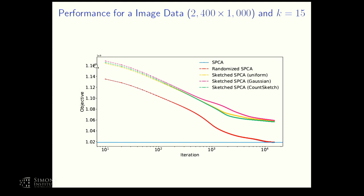We could increase the amount of sketching, but then computational cost increases. The randomized sparse PCA formulation, which I describe next, provides a near-optimal approximation.